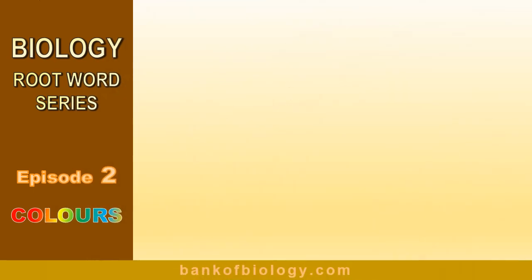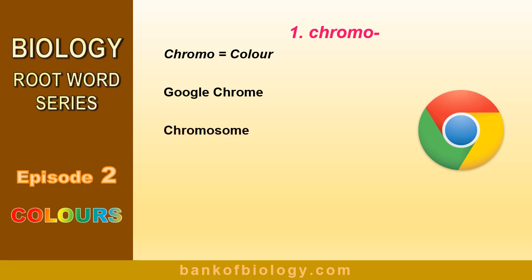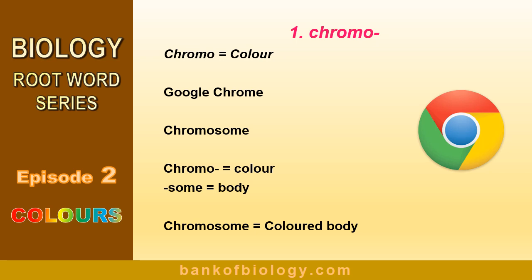First, we have to find the root word for color. It's chromo — chromo means color. All of you know the term chrome, like Google Chrome, whose logo is a colored circle. Chromo means color, and SOM means body or structure. Thus, chromosome means colored body. This name is given because chromosomes must be stained to be observed under a microscope, so we can see them as colored bodies.